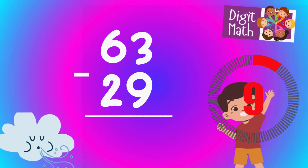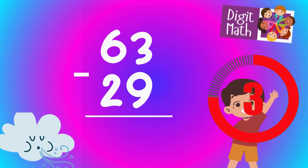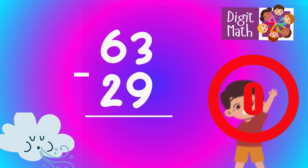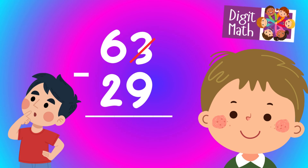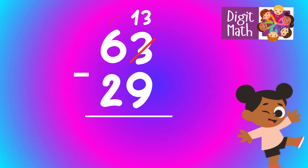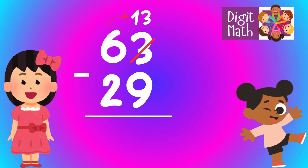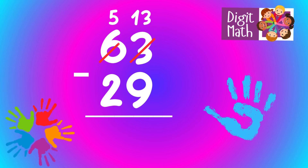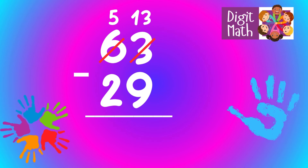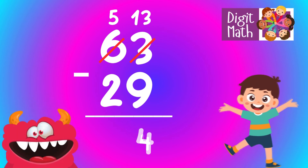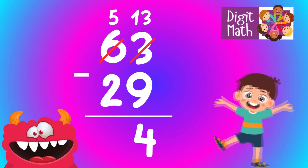63 minus 29 is? Time to think. In the units column, we have 3 minus 9. Since it's not possible to subtract 9 from 3, we need to borrow from the tens column. In the tens column, we have 6. We take 1 from the tens, leaving 5 in the tens column and turning the units column into 13. Now we have 13 in the units column. Subtract 9 from 13, which equals 4. In the tens column, we now have 5. Subtract 2 from 5, which equals 3.